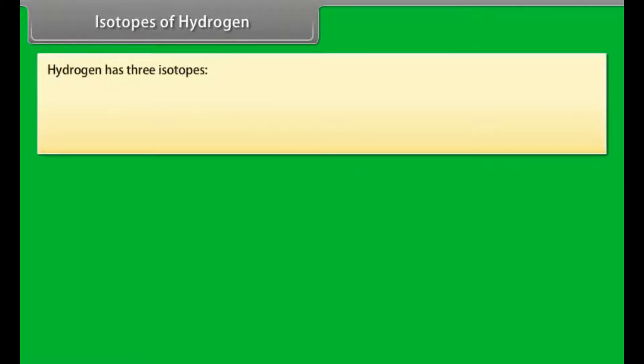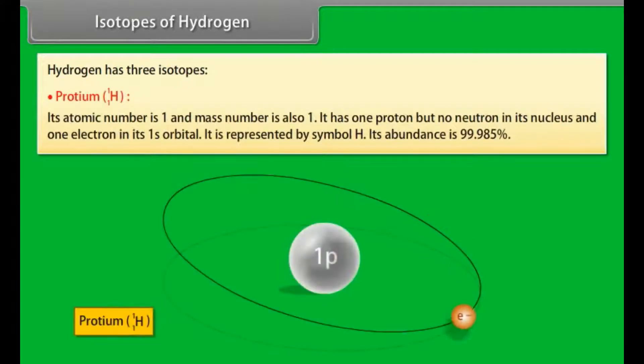Isotopes of hydrogen. Hydrogen has three isotopes. Protium: Its atomic number is 1 and mass number is also 1. It has one proton but no neutron in its nucleus and one electron in its 1s orbital. It is represented by symbol H. Its abundance is 99.985%.